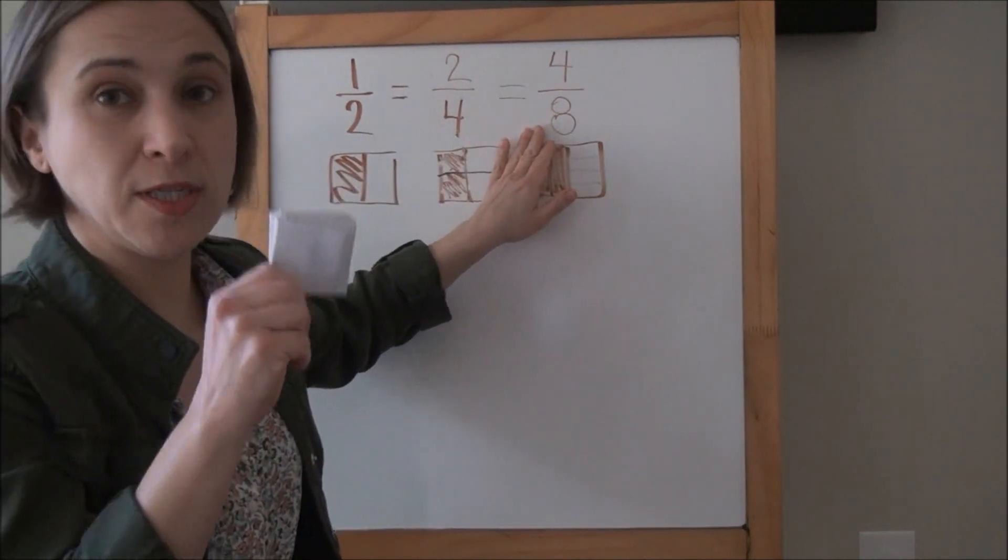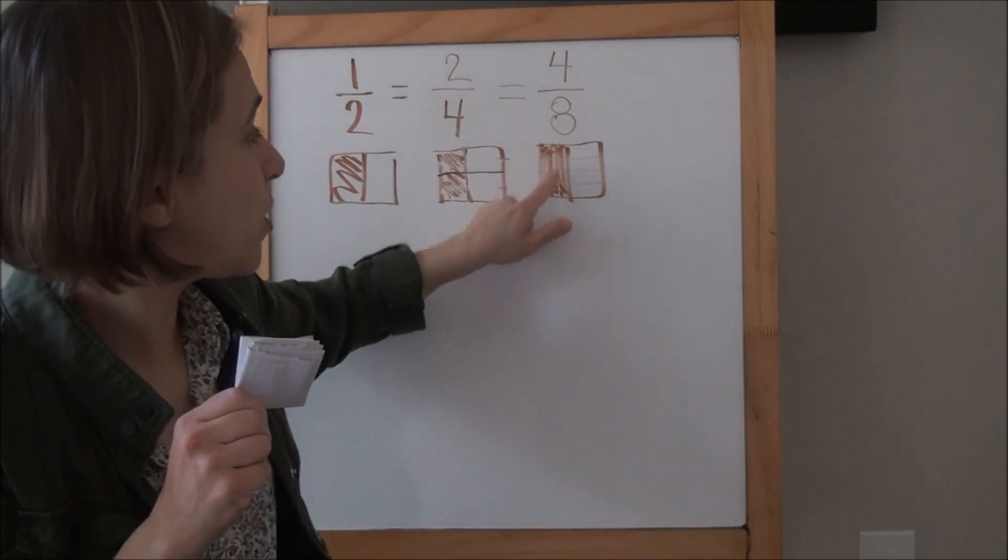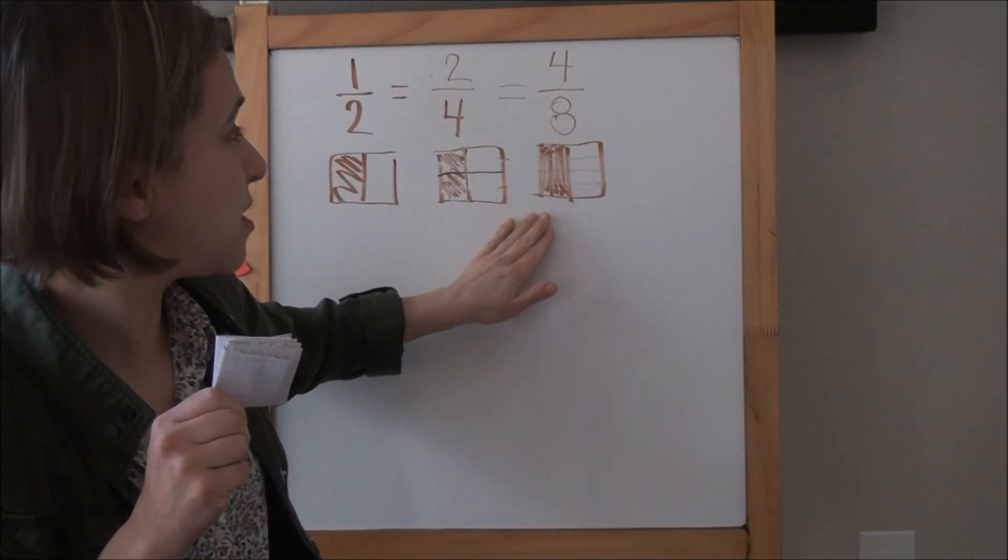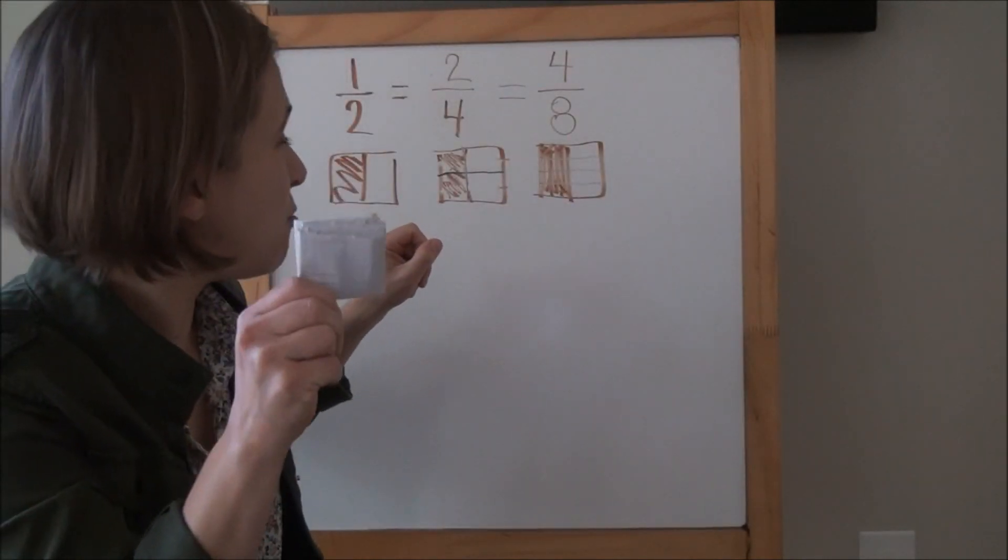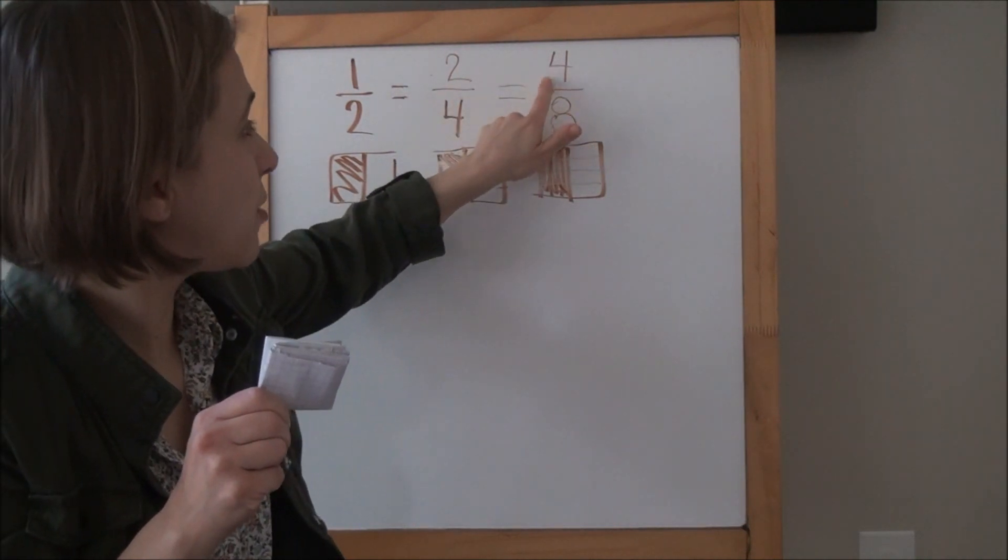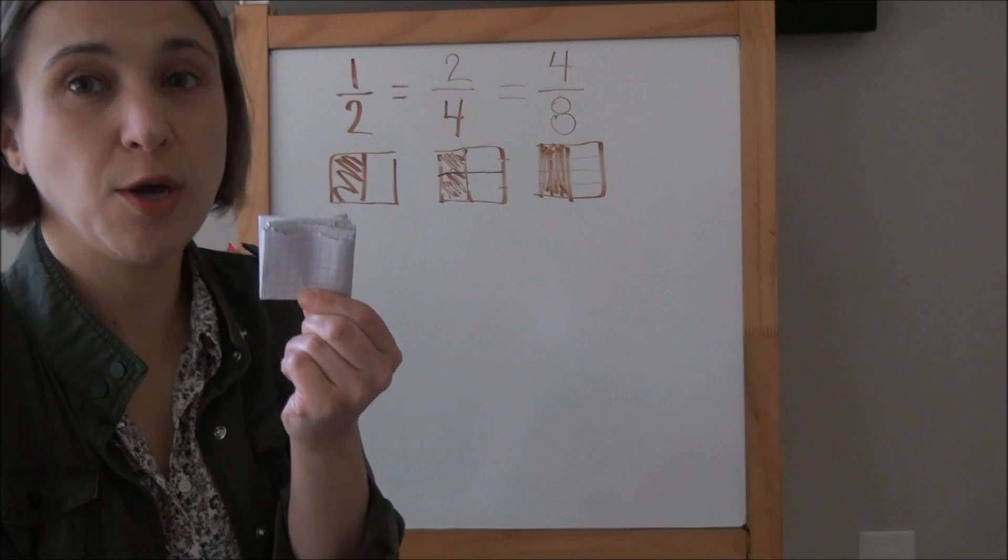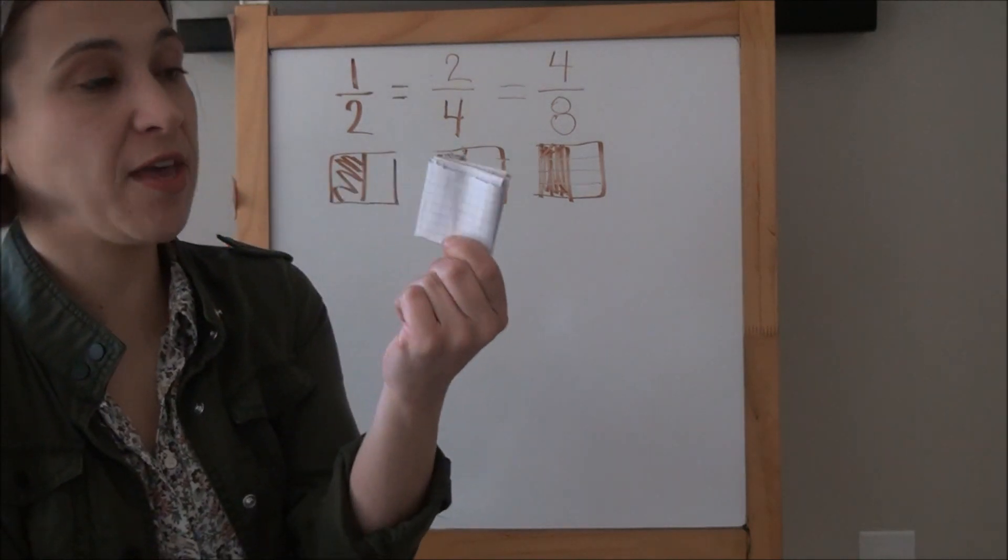Then we took our small shape and folded it in half again. Again we didn't color anything extra. We didn't take anything away. But by folding in half an extra time, we doubled the number of parts and that ended up doubling the parts that were shaded. So now thinking about what you noticed on the board, think about what fraction of your paper is shaded now.